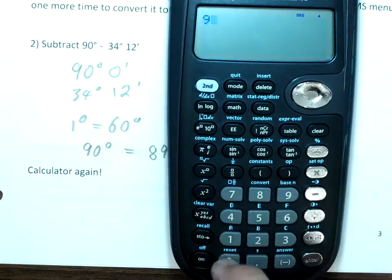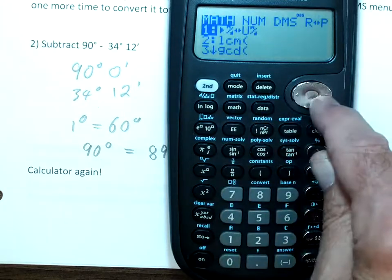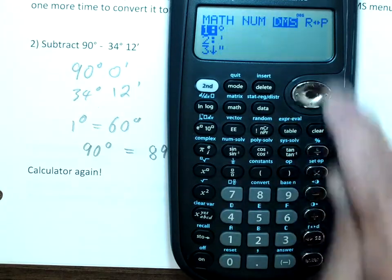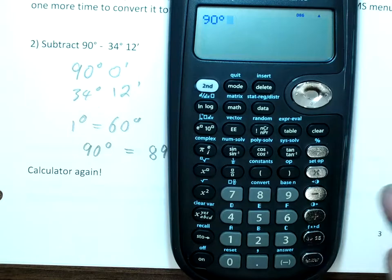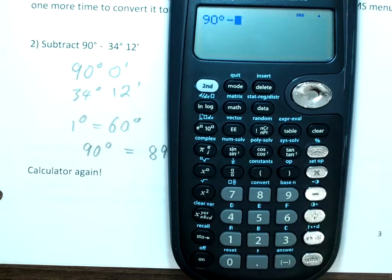so we go 90, remember we went to math, DMS to get the degree sign right there, and then just hit subtraction, the minus sign,